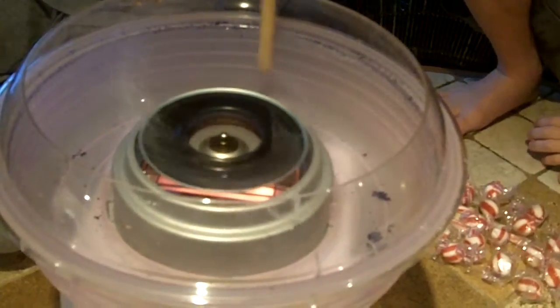Alright, my turn. I'm using the other side. That's good. Jolly Rancher cotton candy. We'll check it out with a different candy.